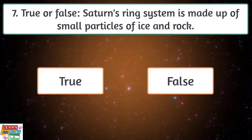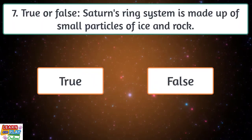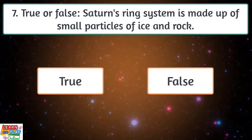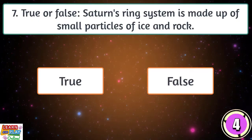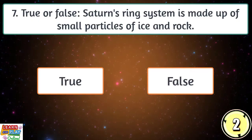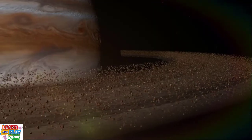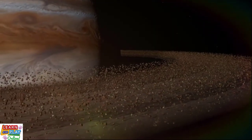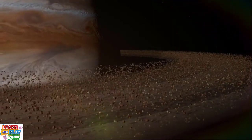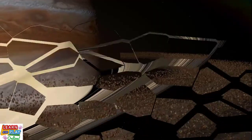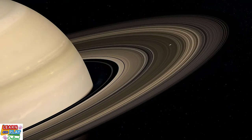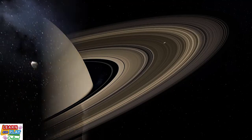Question 7. True or false? Saturn's ring system is made up of small particles of ice and rock. Saturn's most recognizable feature, its ring system, is indeed made up of billions of small particles of ice and rock. They range in size and shape and can be as tiny as dust or as big as houses or small mountains.